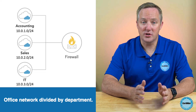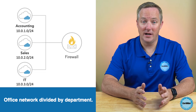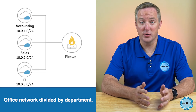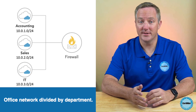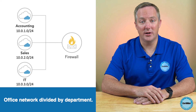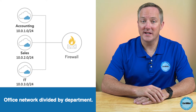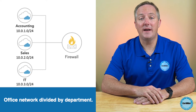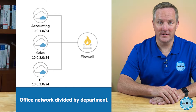Once you start shifting the dividing line between network and host addresses around, you'll need to tell network devices how you've done that. You do this by assigning a subnet mask to the network.